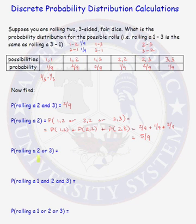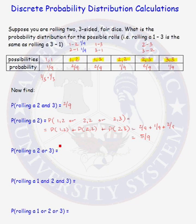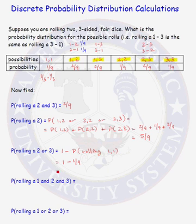Now we want to know the probability of rolling a 2 or a 3. When do we roll a 2 or a 3? Looking at the table, in every case with the exception of rolling two 1s, we roll a 2 or a 3. Rather than adding up those five numbers, we can use the complement: 1 minus the probability of rolling two 1s, which is 1 minus one-ninth, which equals eight-ninths. So the probability of rolling a 2 or a 3 is eight-ninths.